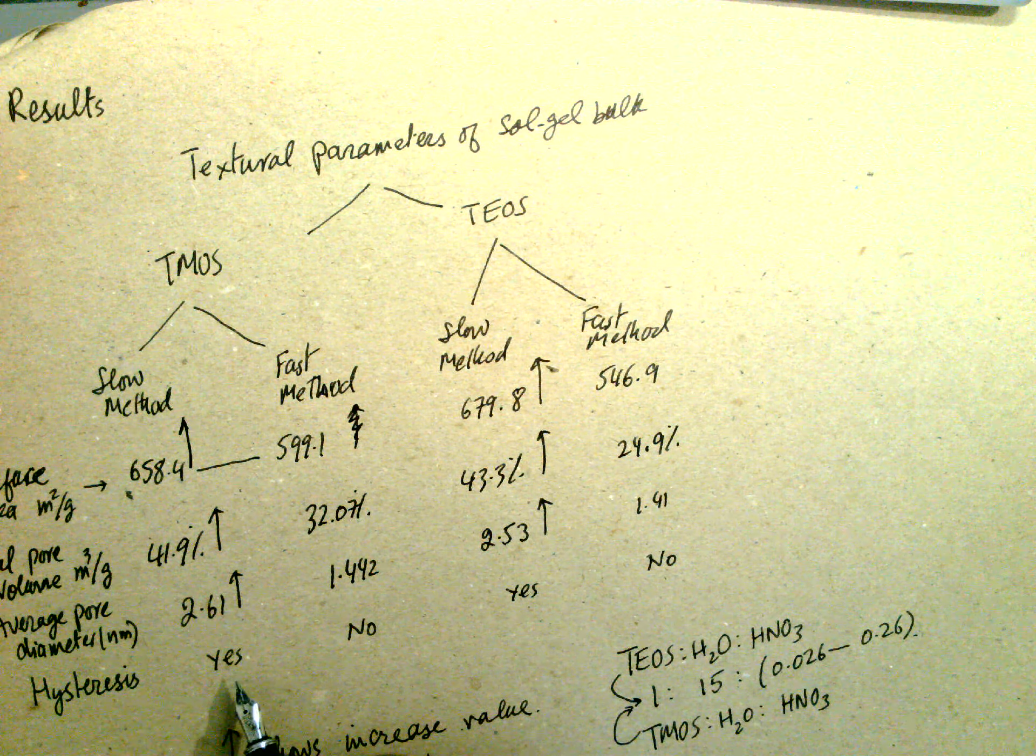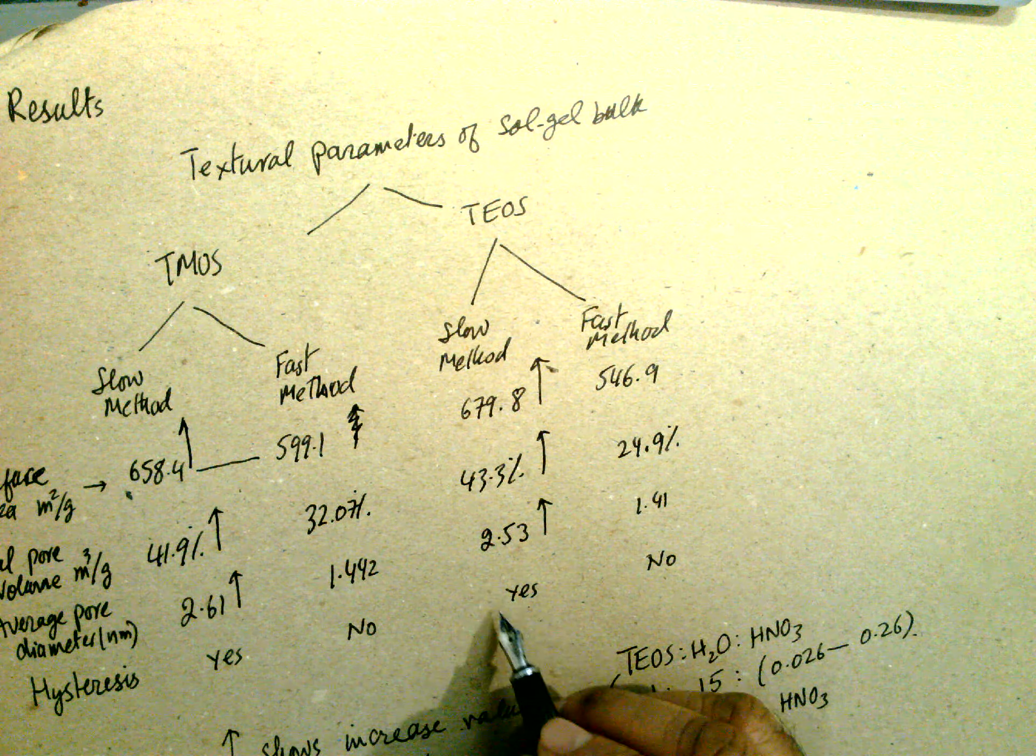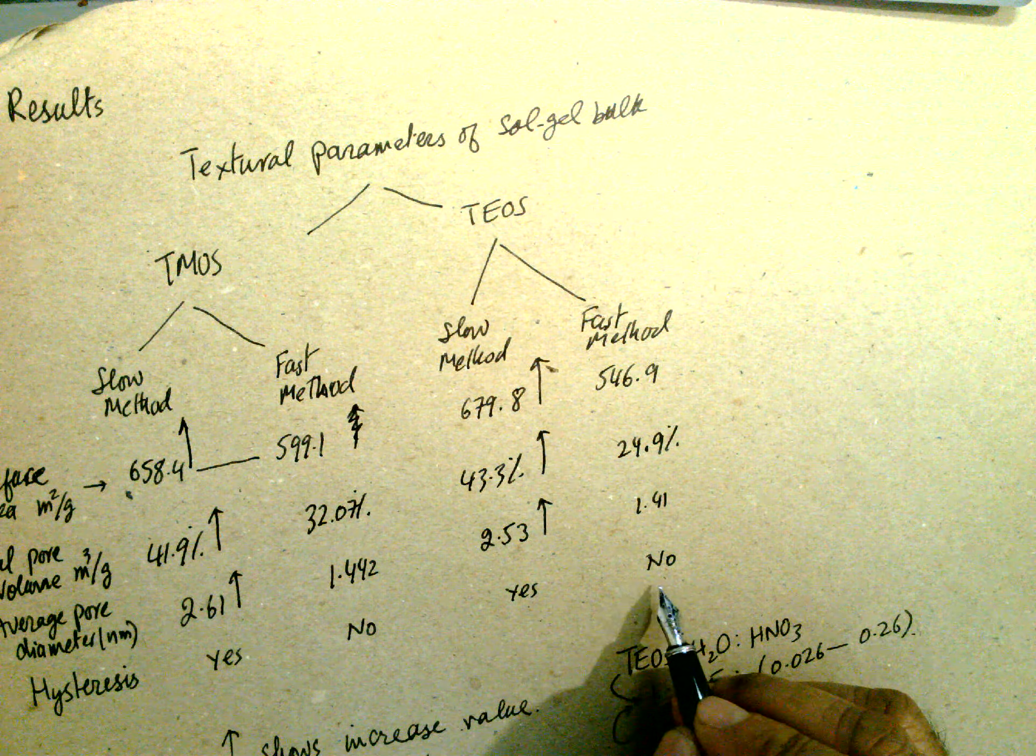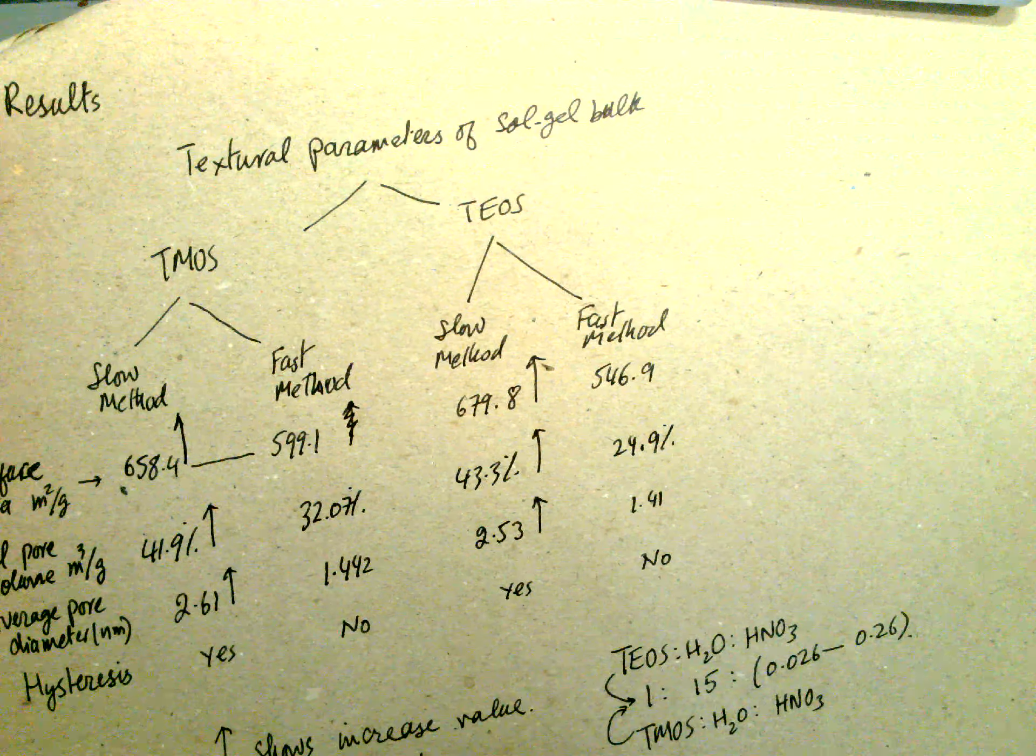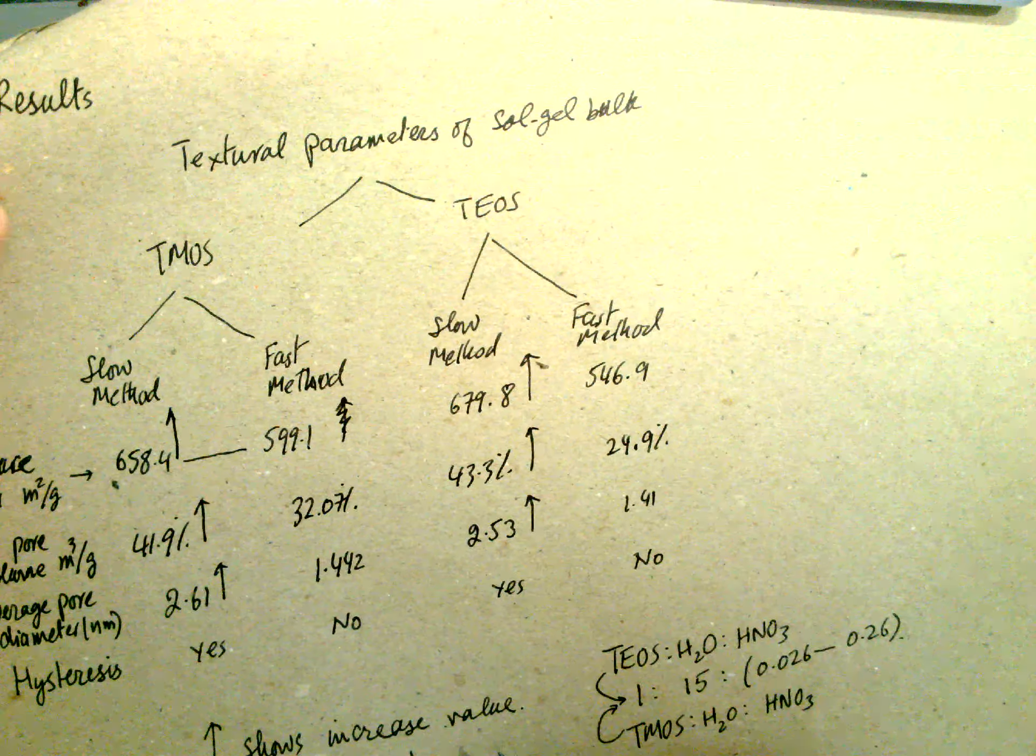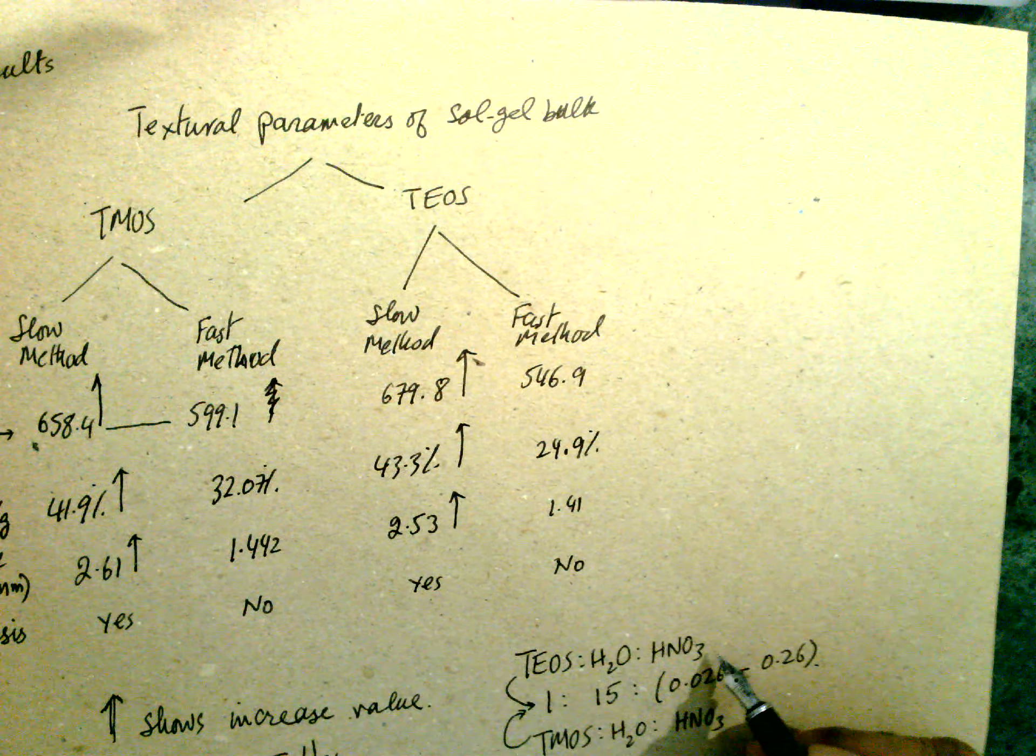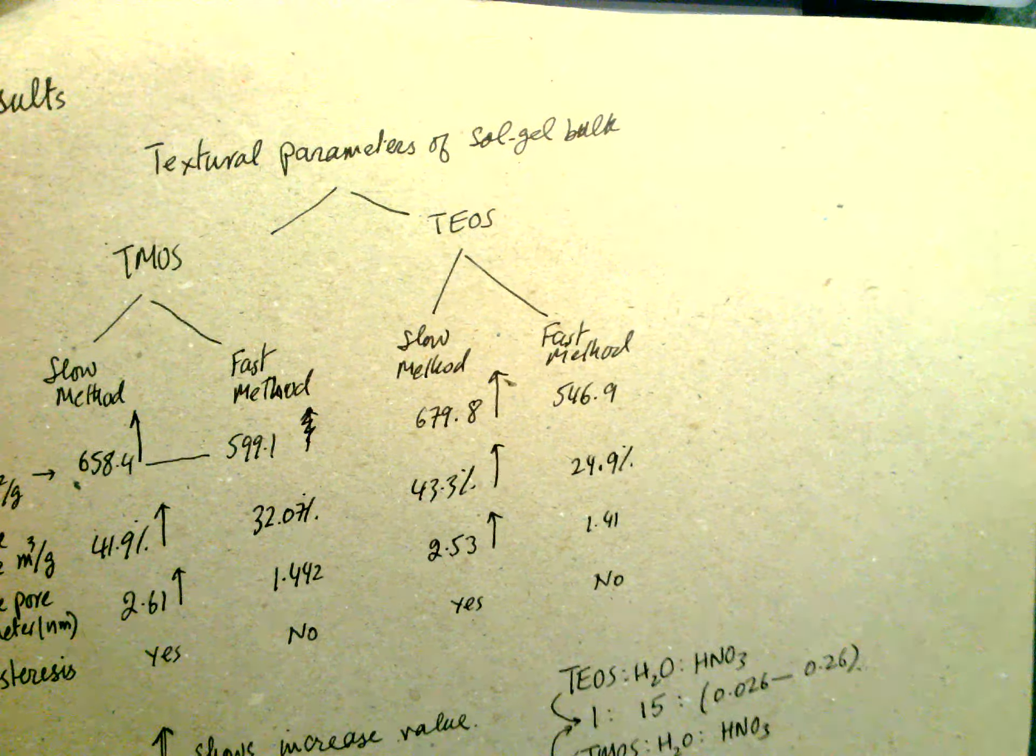Average pore diameter 2.61, and this one is 2.53. Hysteresis in slow method, yes. No hysteresis. Hysteresis yes in the TEOS, and no hysteresis in fast method. Slow shows increased values, this means higher value. Table one: TEOS is this one, and TMOS. This is the concentration.